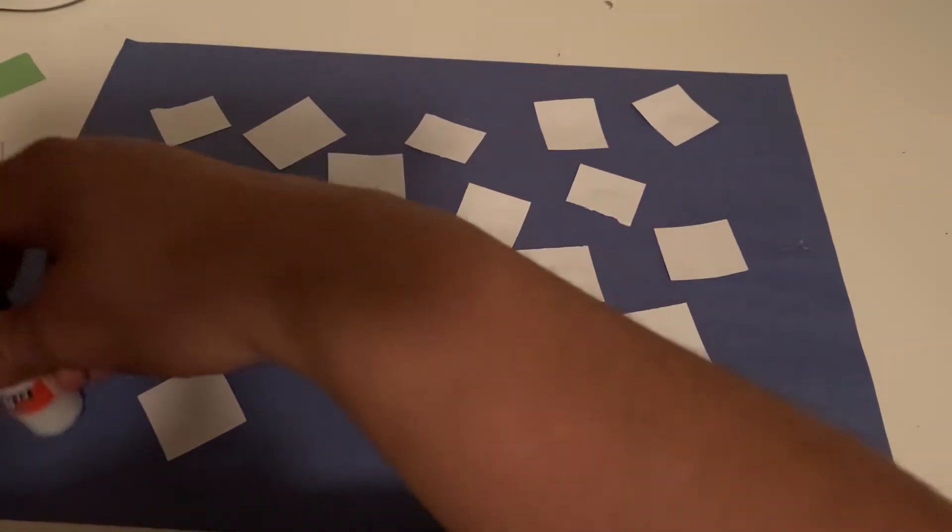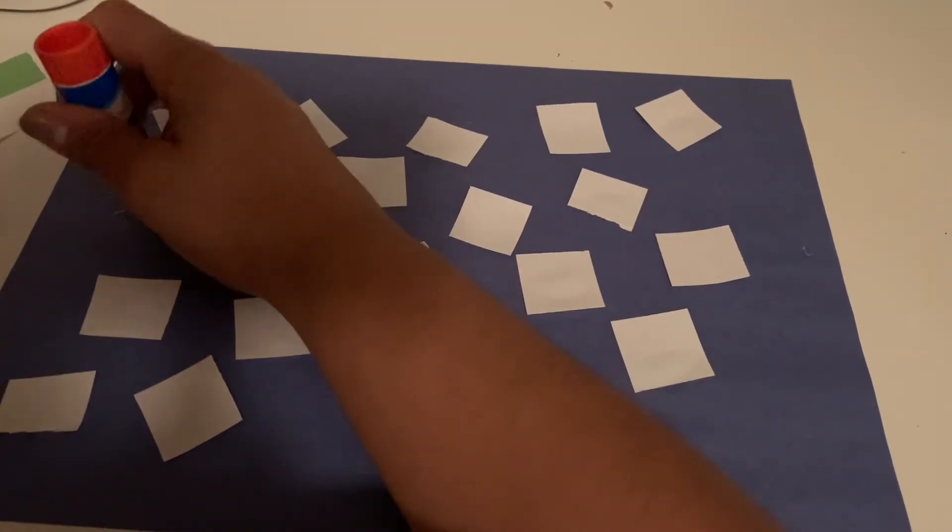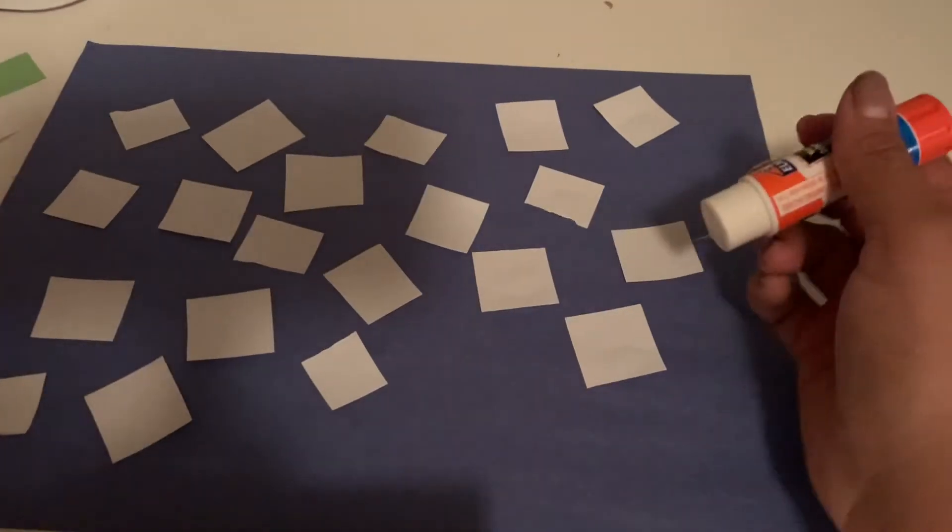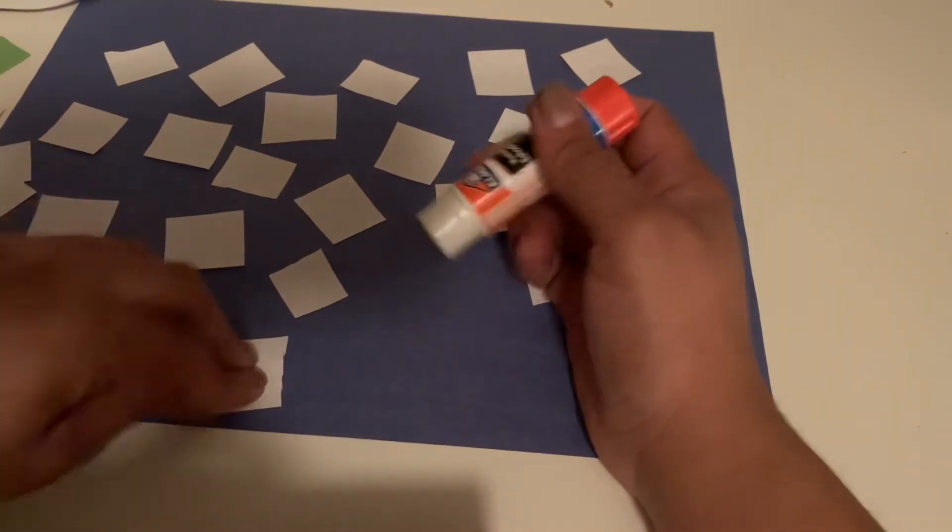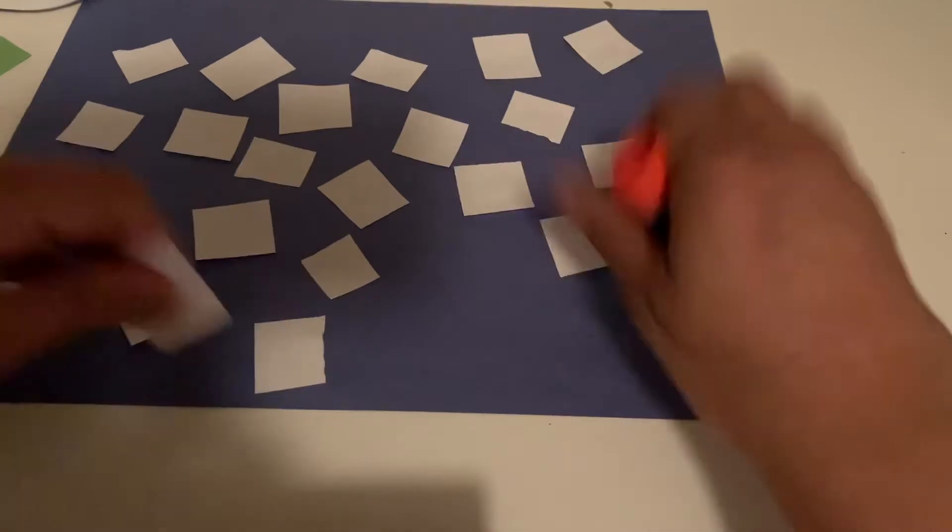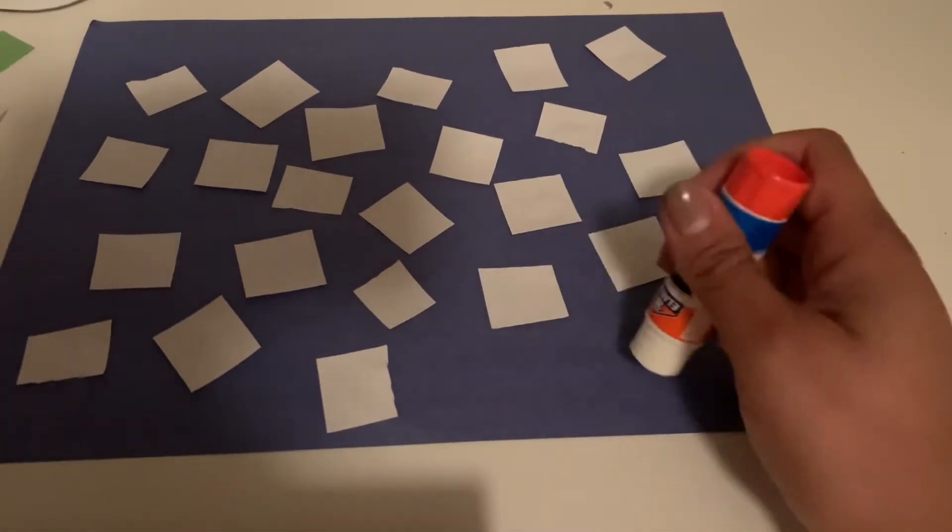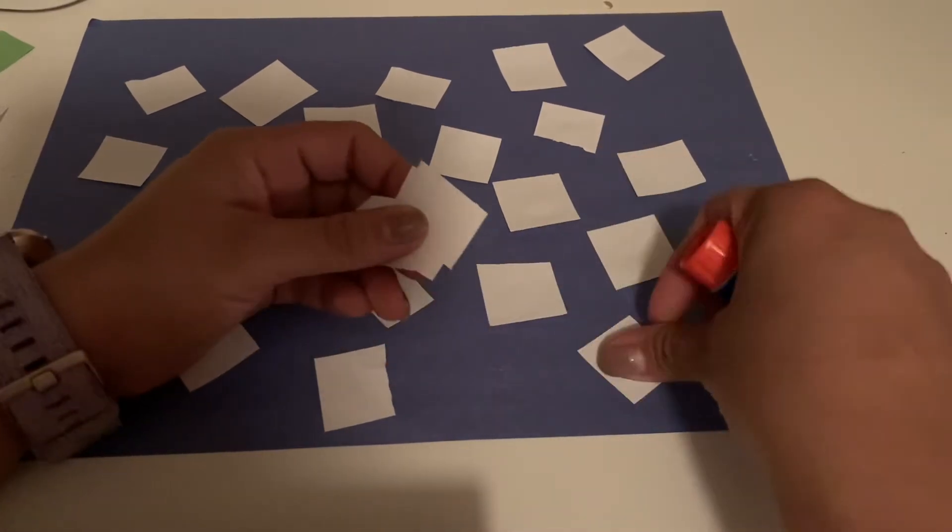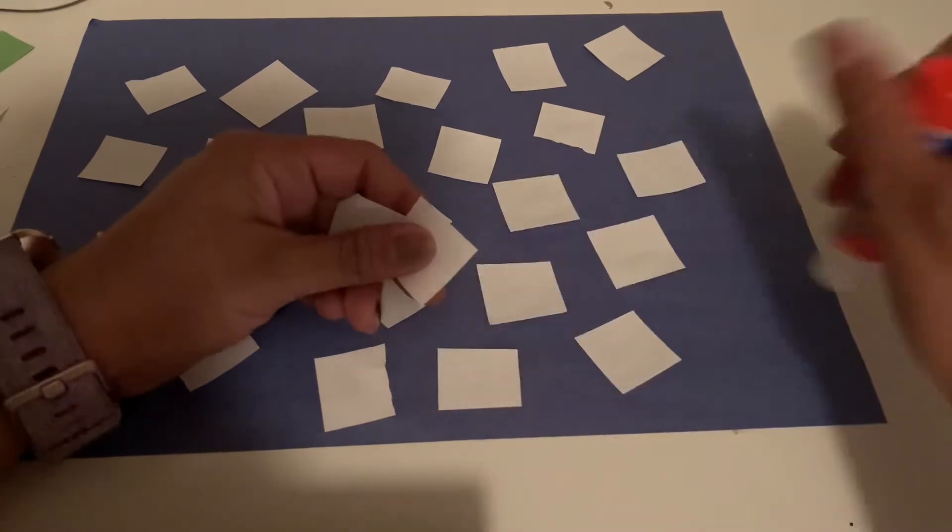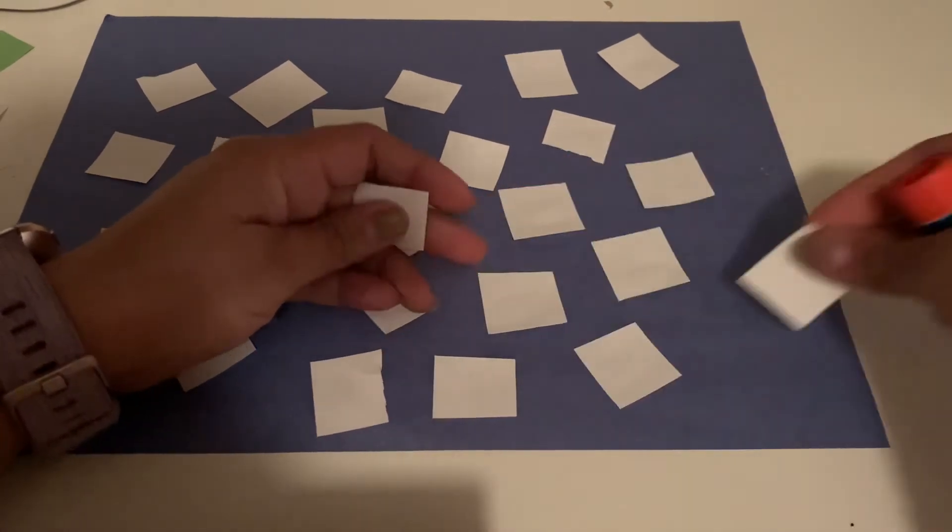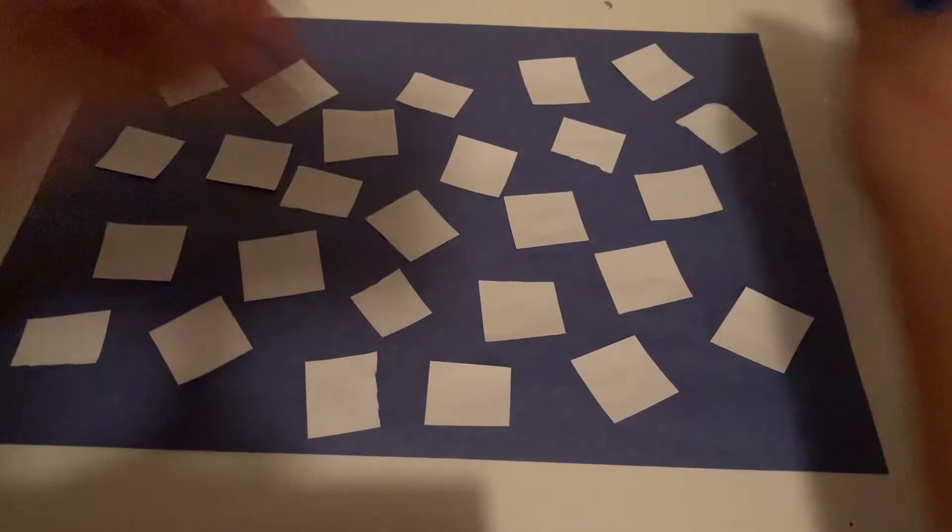All right, a couple more white pieces. Try to cover as much of the blue as we can. I don't have to cover all of it, but let's see. Teacher Victoria needs to do some on this side too. So you can do however many white pieces you guys want, but we want to try to make sure we're covering most of the blue.